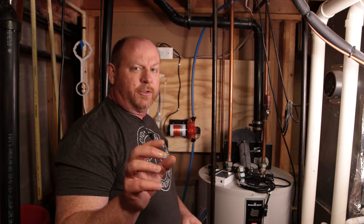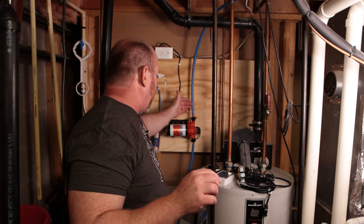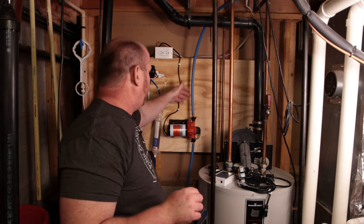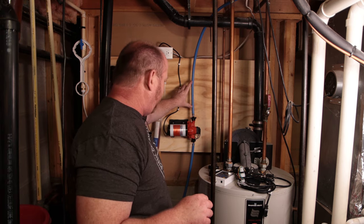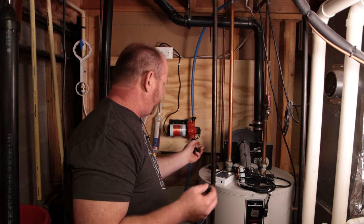So where we're going to install the flow control device is going to actually be in line with the RO system pump. And so I'm going to actually have to cut a section of the PEX pipe out of here. And that's why I've got the PEX connectors.